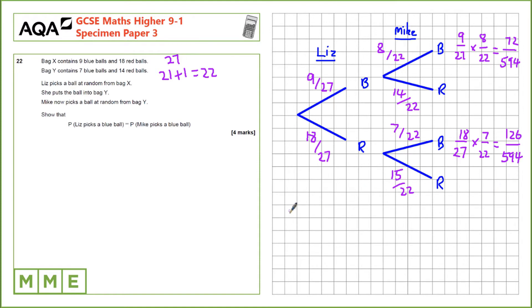The final thing we need to do to calculate the probability that Mike picks a blue is to add these probabilities. So we have 72 over 594 plus 126 over 594 which equals 198 over 594.